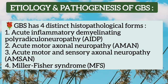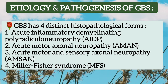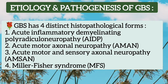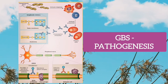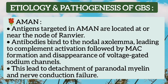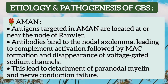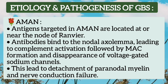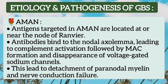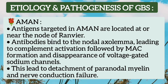There are four distinct histopathological forms of GBS: acute inflammatory demyelinating polyradiculoneuropathy, acute motor axonal neuropathy, acute motor and sensory axonal neuropathy, and Miller-Fisher syndrome. In acute motor axonal neuropathy, the antigens targeted are located at or near the node of Ranvier. Specific antibodies bind to these antigens on the nodal axolemma and lead to complement activation, formation of membrane attack complex, and disappearance of voltage-gated sodium channels.